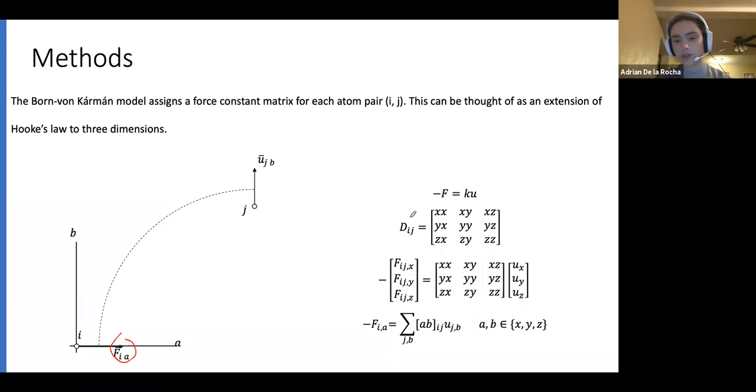Another way of looking at the results from this model is the total force acting on i in the direction of a equals the sum of all atoms j that it interacts with over all dimensions b. A and b are placeholders for x, y, and z. In the diagram to the left, I picture the correlation between the movement of j in direction b and how this affects the force in i in direction a, described by the element ab of matrix dij.